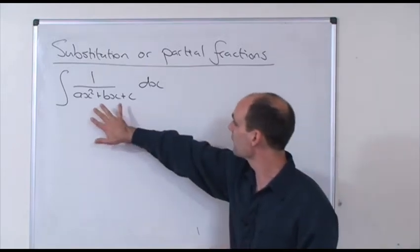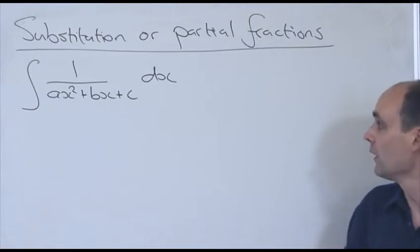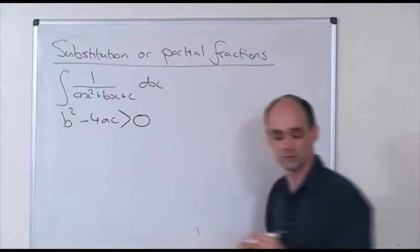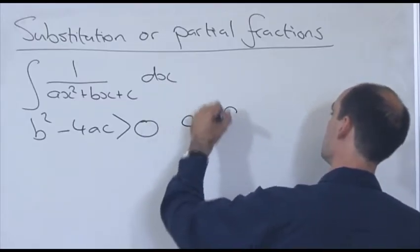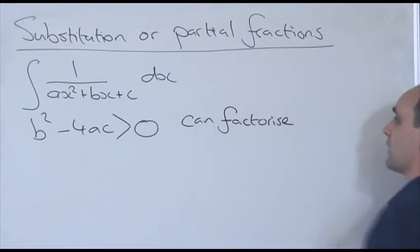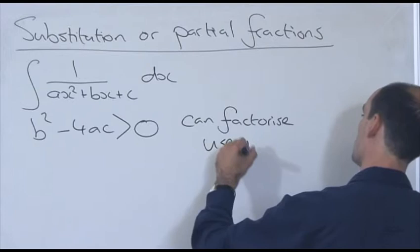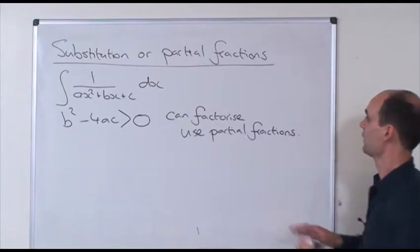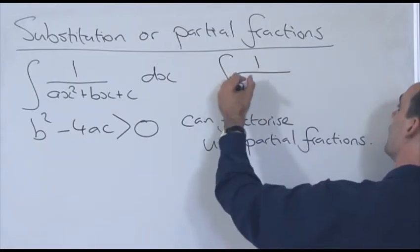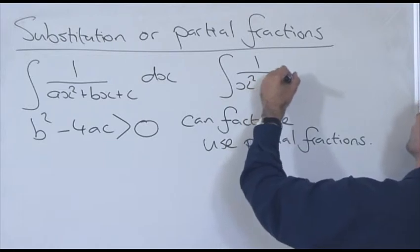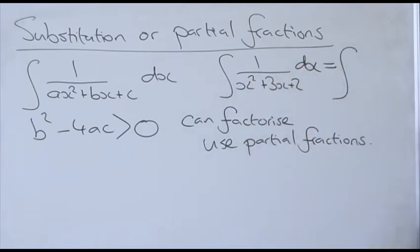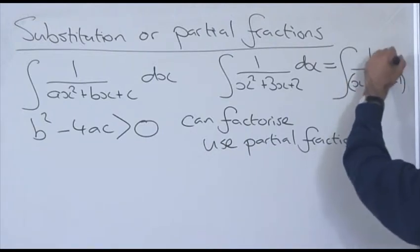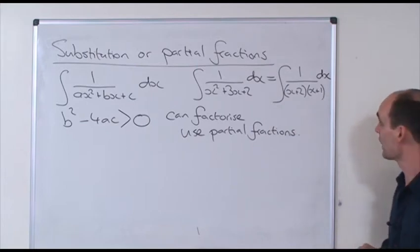What you really need to look at is: can I factorise that quadratic on the bottom? If b squared minus 4ac is greater than 0, then I can factorise the quadratic, in which case I should use partial fractions. A simple example would be the integral of 1 over x squared plus 3x plus 2 with respect to x. That's a quadratic I can factorise, so I can rewrite it as 1 over (x plus 2)(x plus 1) and use the partial fractions method.